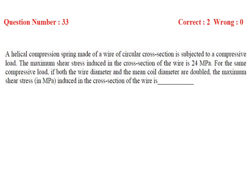Next question: a helical compression spring made of a wire of circular cross section is subjected to a compressive load. The maximum shear stress induced in the cross section of the wire is 24 MPa. For the same compressive load, if both the wire diameter and the mean coil diameter are doubled, what is the maximum shear stress induced in the cross section of the wire?